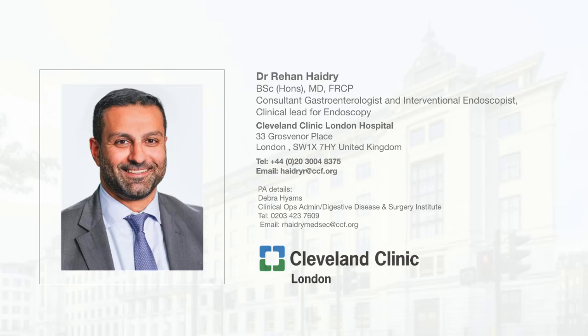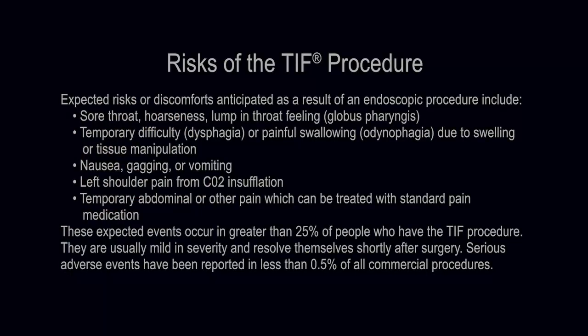Expected risks or discomforts anticipated as a result of an endoscopic procedure include sore throat, hoarseness, lump-in-the-throat feeling (globus pharyngeus), temporary difficulty or painful swallowing (dysphagia, odynophagia) due to swelling or tissue manipulation, nausea, gagging or vomiting, left shoulder pain from CO2 insufflation, and temporary abdominal or other pain, which can be treated with standard pain medication.